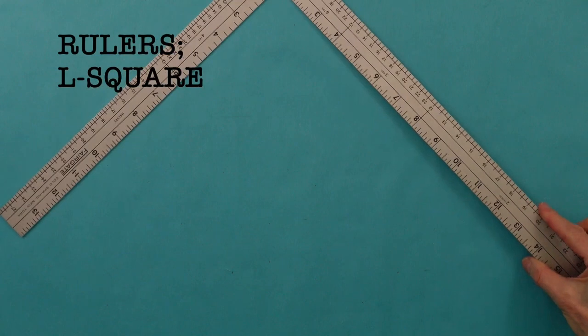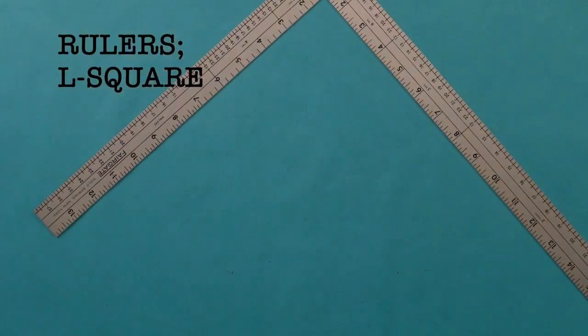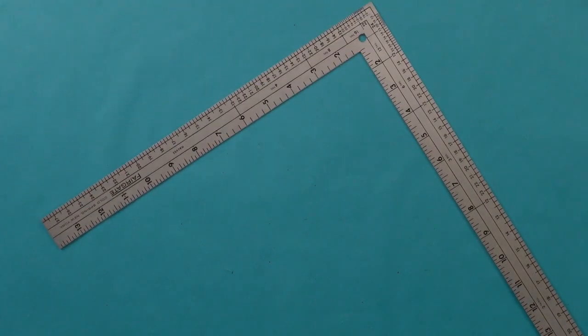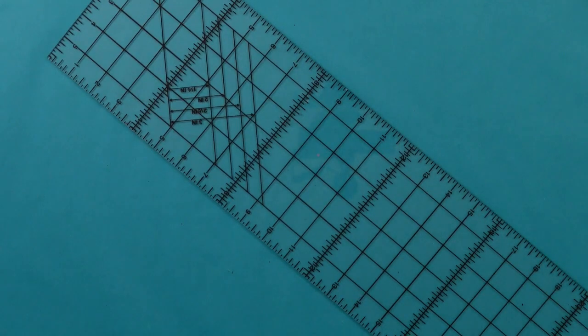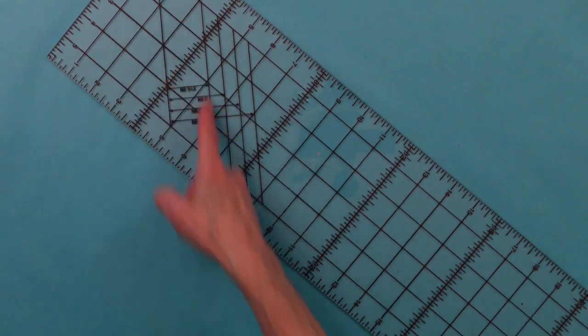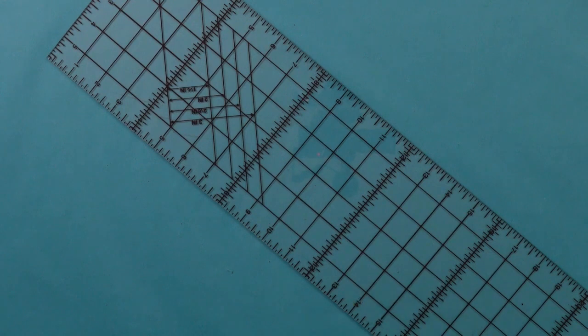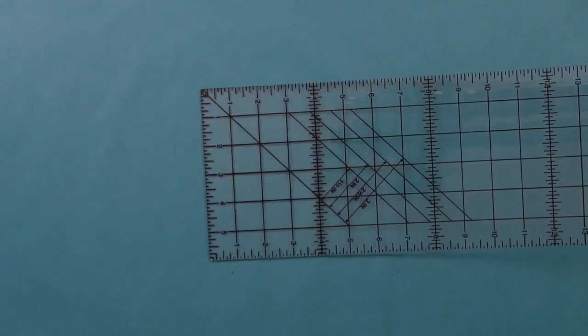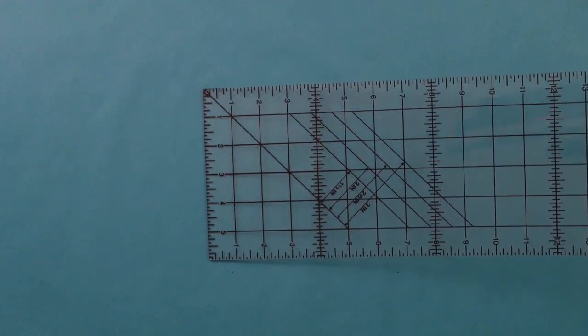You need rulers. I like this. This is 14 by 24 and it's great for making right angles. This is 6 by 24 inches. I like it because it has the diagonals and it has one inch squares. It's really good to use and you can also use it for right angles. So if you don't want to buy the L square, that will suffice.